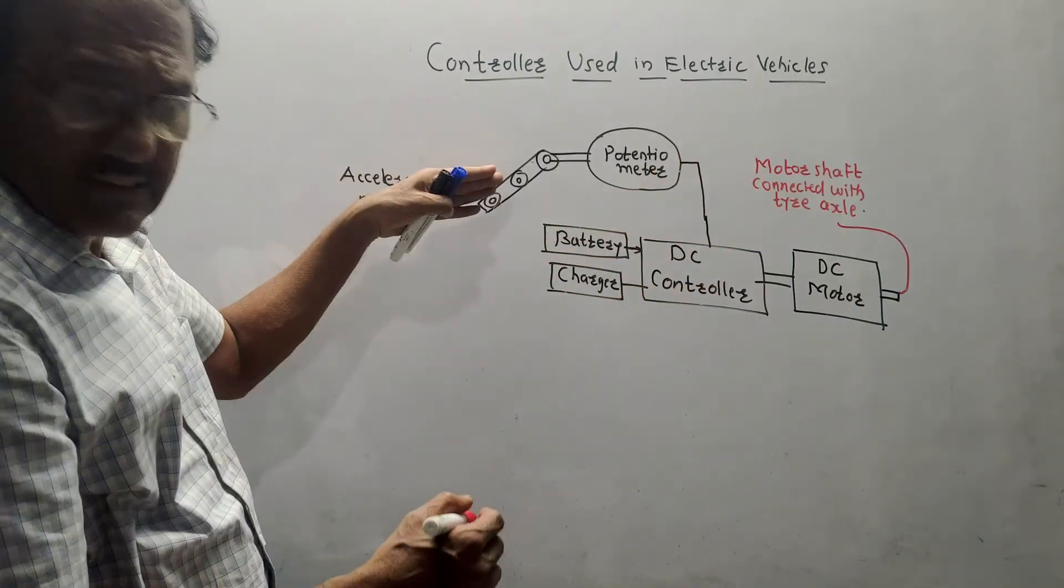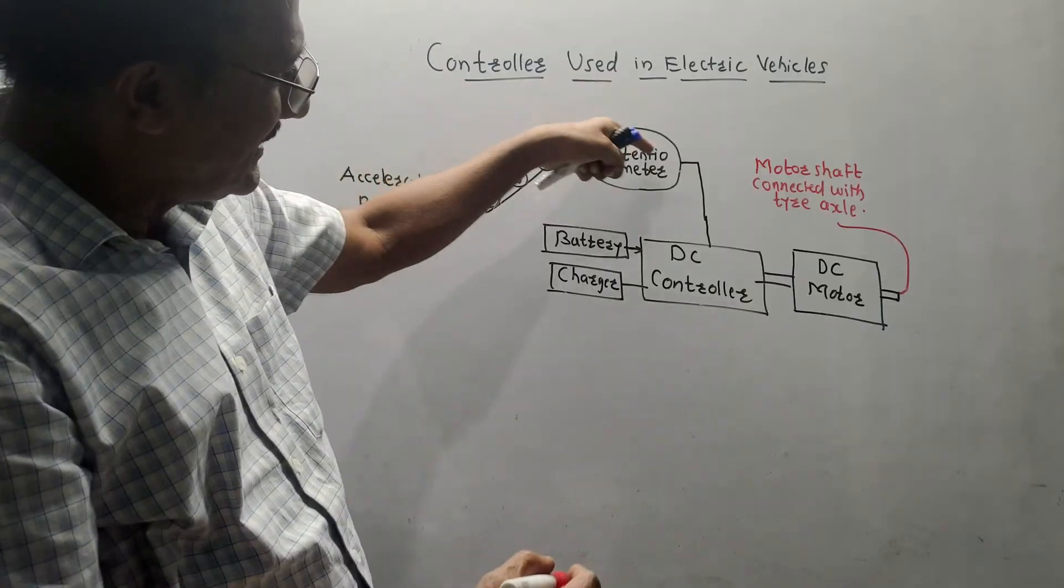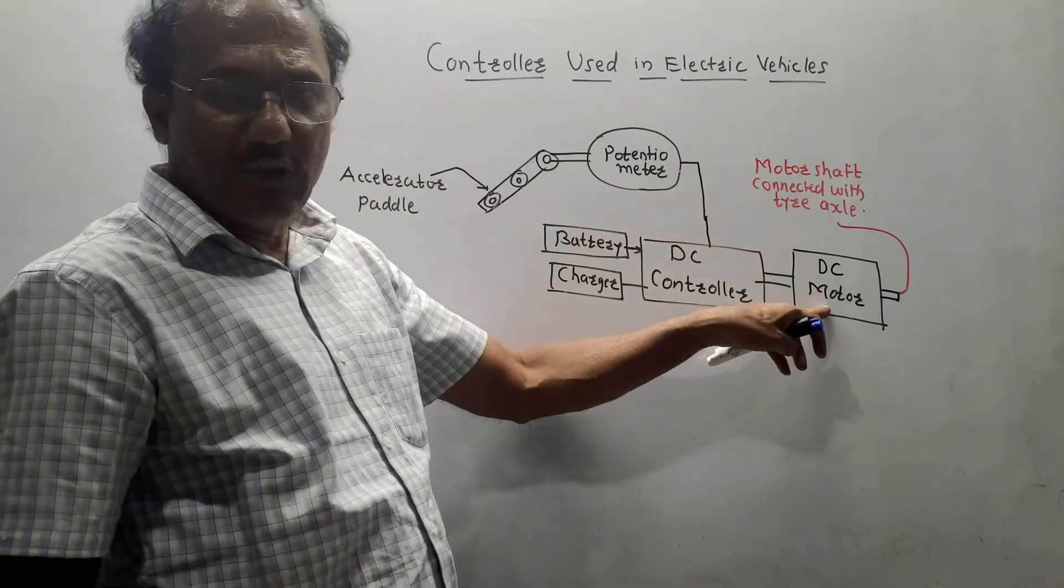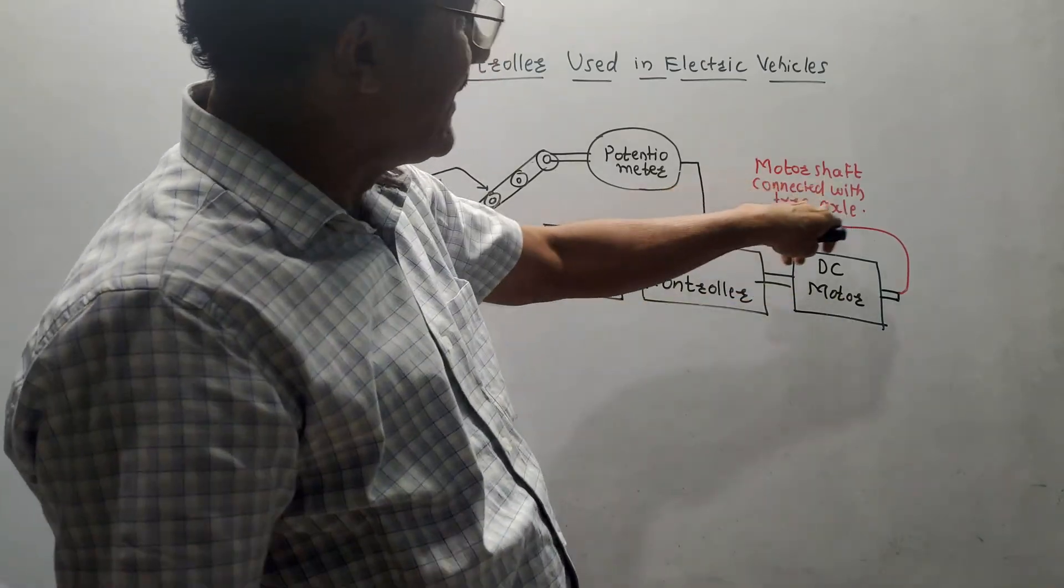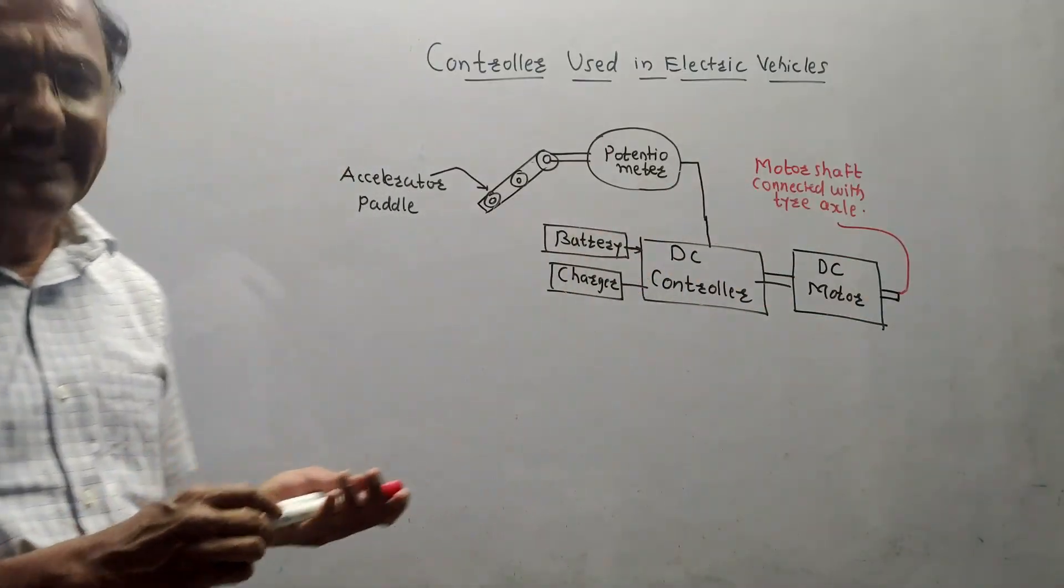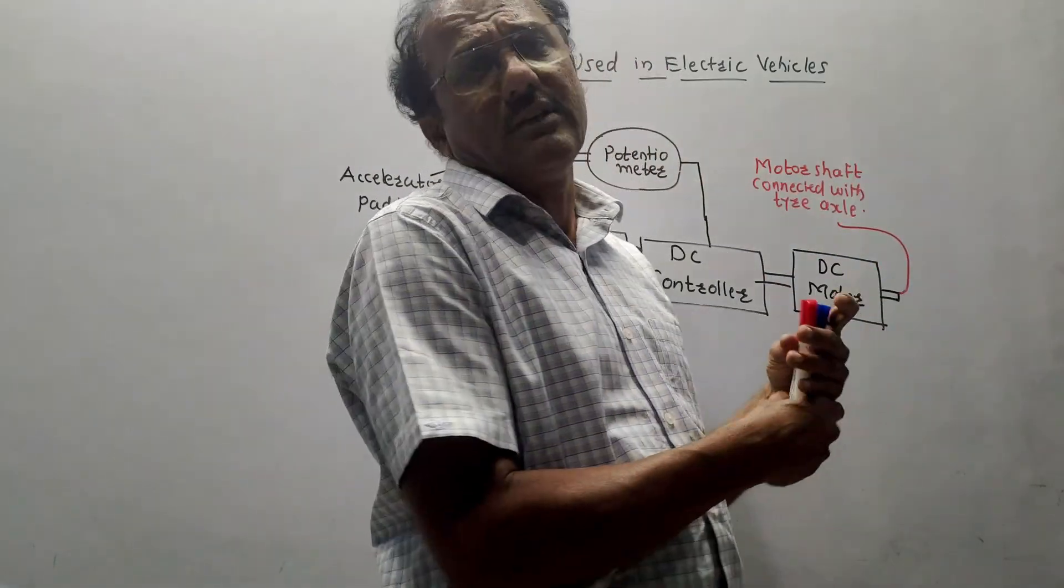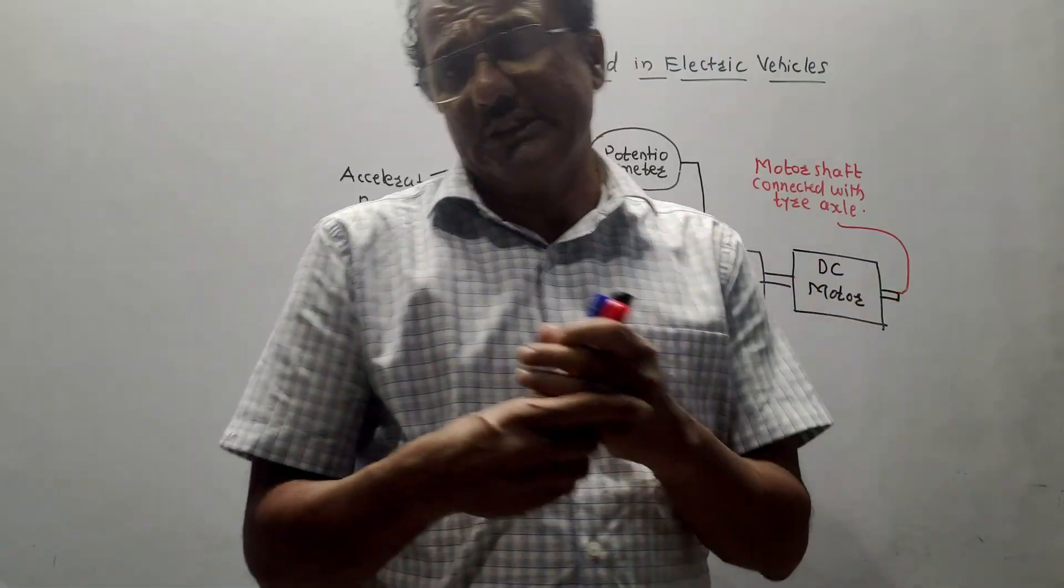If the driver presses this accelerator pedal by some amount, accordingly, potentiometer signal is generated. DC controller takes the decision and corresponding signal is given to the DC motor which starts rotating and it is connected with the tire axle. So, accordingly, the speed of electric vehicle is decided. So, dear students, that's it for this unit. This is the simplest unit in our syllabus. So, thank you. Thanks a lot for watching this video.